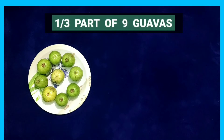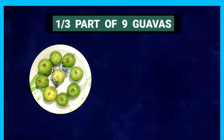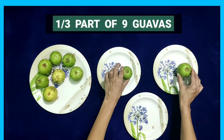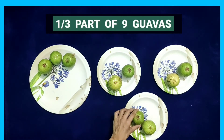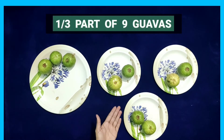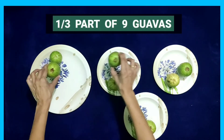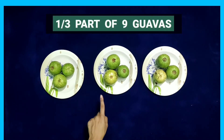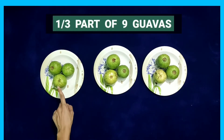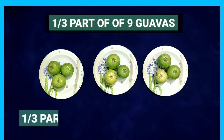Let's solve Part A of question 3. We have to find 1/3 part of 9 guavas. 1/3 means we'll divide them into 3 equal parts and consider 1 part out of 3. We place 1 guava in each plate, repeating until all 9 guavas are distributed. This way we have divided 9 guavas into 3 equal parts, and each part contains 3 guavas.